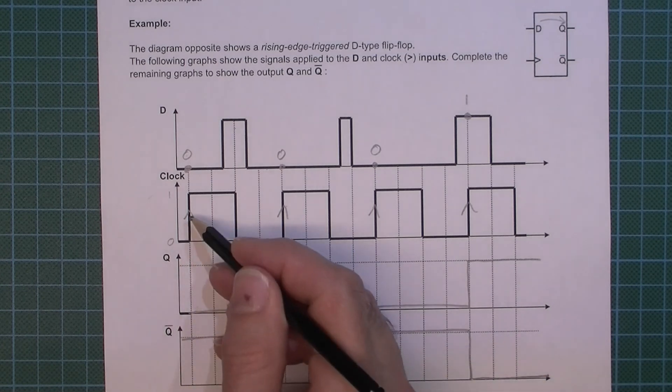Okay, now hopefully that's quite easy to understand. There are some special situations when it gets a little bit more difficult. Perhaps we'll look at those in another video, but for now, hopefully you've got to grips with the fact that for the clock, we're only interested in the rising edges. We can ignore anything else.